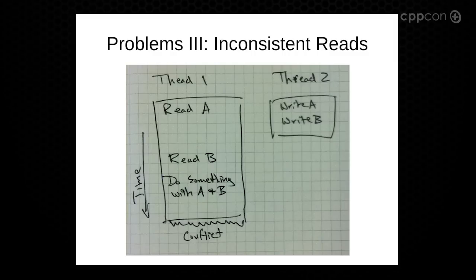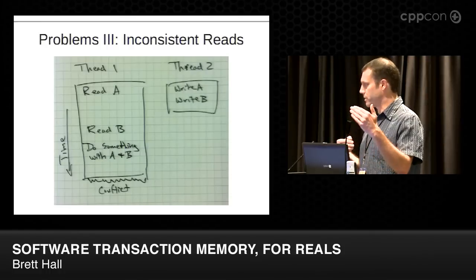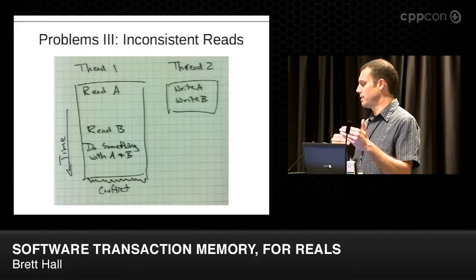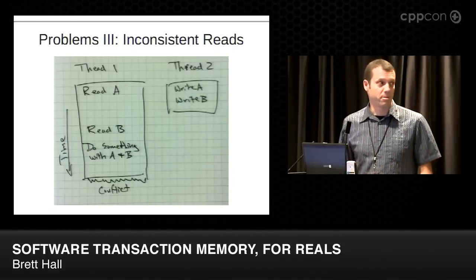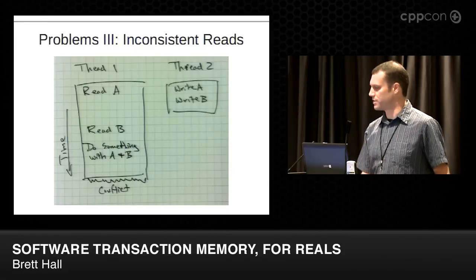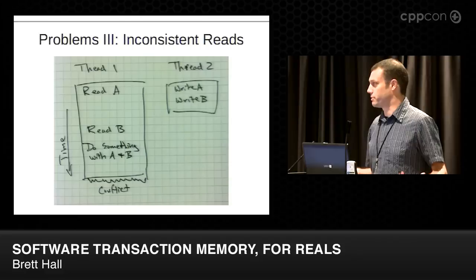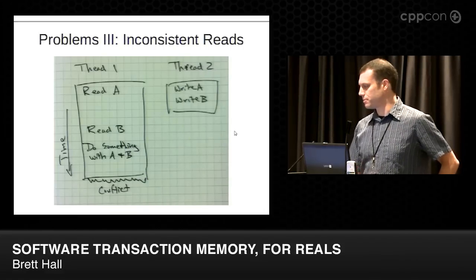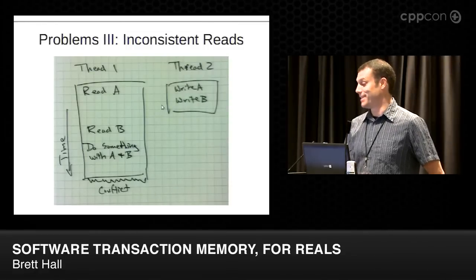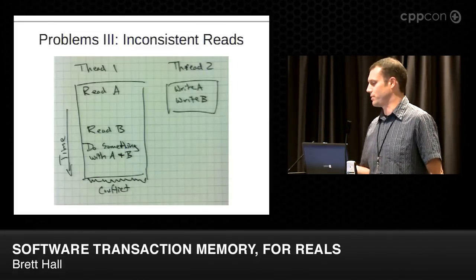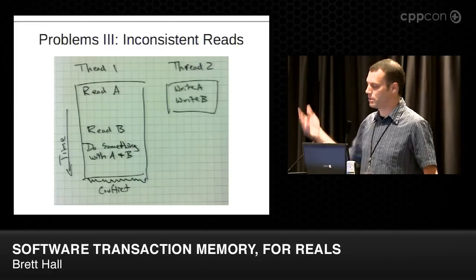Another problem is inconsistent reads. If we have a transaction that writes A and B, and we read A before it commits and B after it commits, we get inconsistent values — the old A and new B. Normally we get the conflict and go back and everything's consistent. But every once in a while something weird will happen, like because A and B are inconsistent with each other, you'll try to allocate 500 gigabytes of memory or something and everything crashes. That's only happened a couple of times. In our case, the fix is to call a function 'validate', which validates your transaction at any point, and if it's invalid you get the conflict right away and go back.